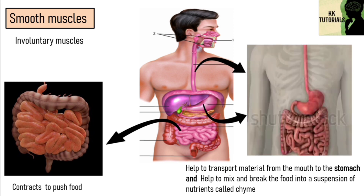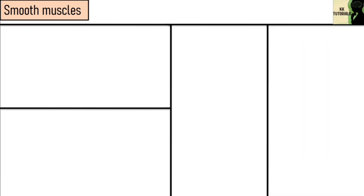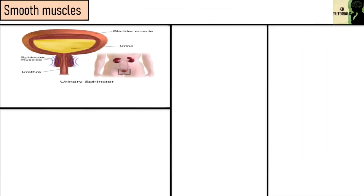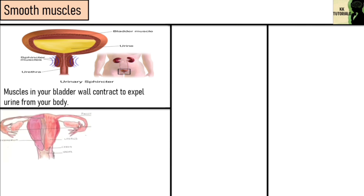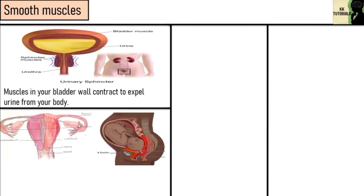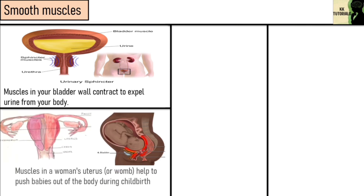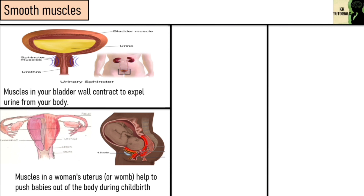Muscles in your bladder wall contract to expel urine from your body. Muscles in a woman's uterus help to push babies out of the body during childbirth.